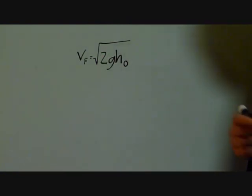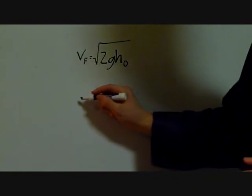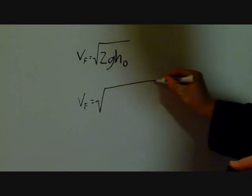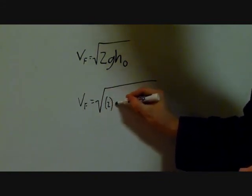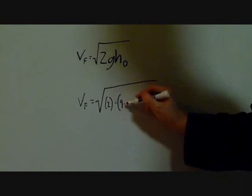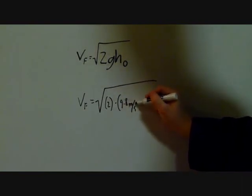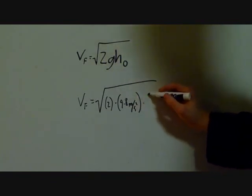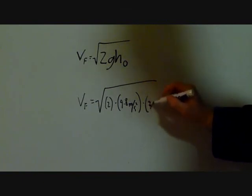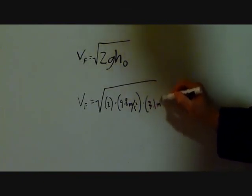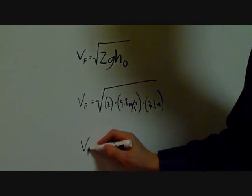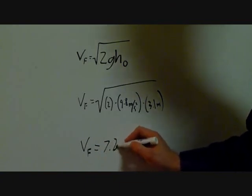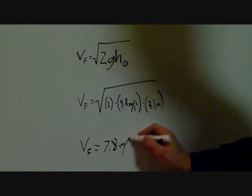The final step is just to plug in the numbers. When you do that, v final will be equal to the square root of 2 times g which is 9.8 meters per second squared, multiplied by the height of the slide which was 3.1 meters. And when you plug this into your calculator, you'll find that v final is equal to 7.8 meters per second.